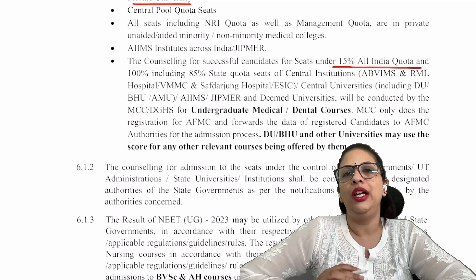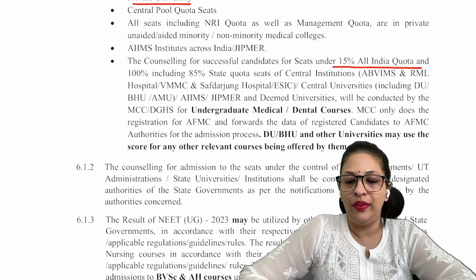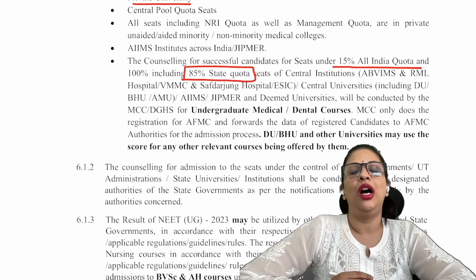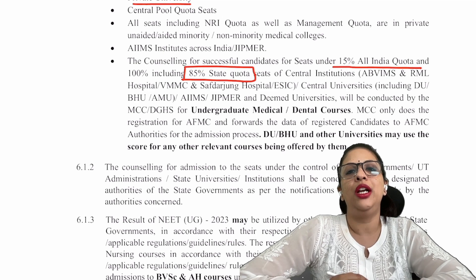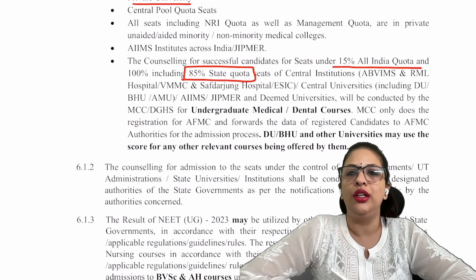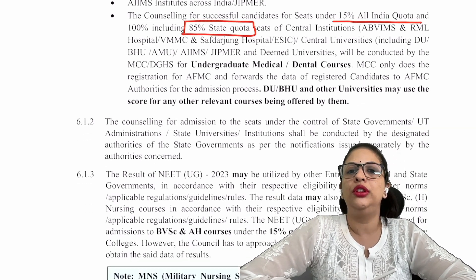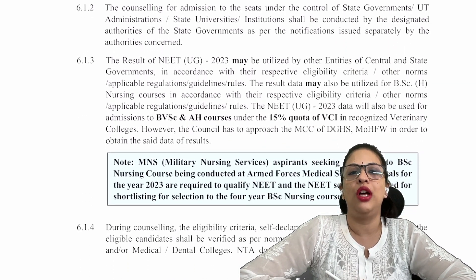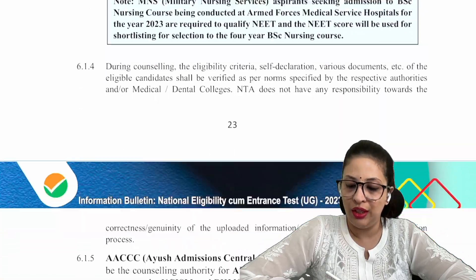The All India quota allows 15% of seats from each state. The remaining 85% is the state quota. State government will also have different provisions. If you are applying to a state other than your home state, domicile rules of that state apply.